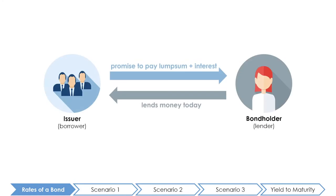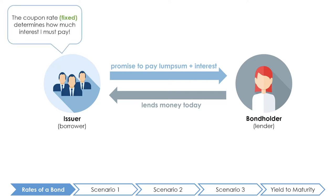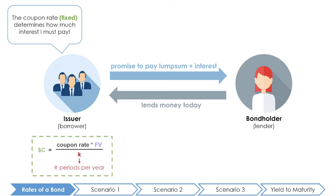When we calculate bond prices there are two rates we need to consider: the coupon rate and the discount rate. The coupon rate is a fixed rate that determines how much the issuer must pay to the bondholder on an annual basis. You can think of the coupon rate as the interest rate. Remember, the coupon rate is always quoted in annual terms using annual percentage rates or APR, and you can use the coupon payment formula to calculate the dollar amount of each coupon for different coupon payment frequencies.